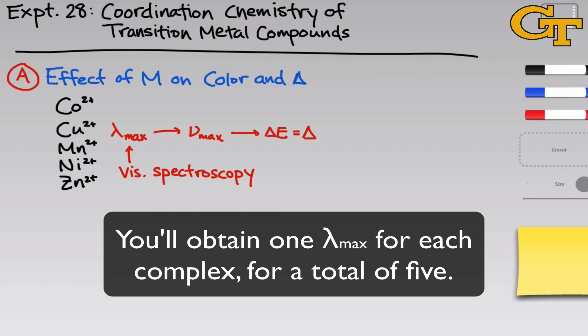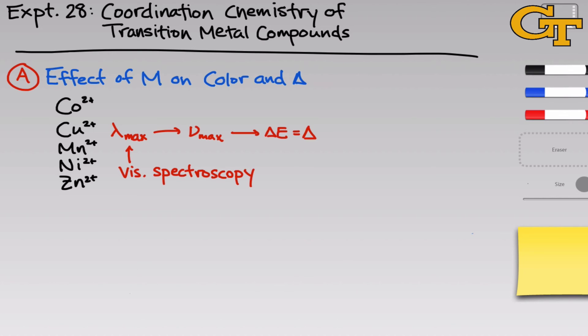From these we can pull a lambda max value, remember this is the wavelength at which maximum absorption occurs, and this wavelength corresponds to the energy difference delta. So we can use the lambda max to calculate a nu max, which is the frequency of maximum absorption, we can use that to calculate a delta E value, and that delta E value just is the crystal field splitting parameter delta.